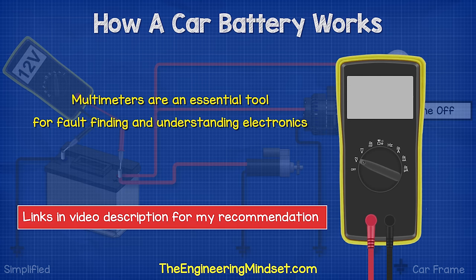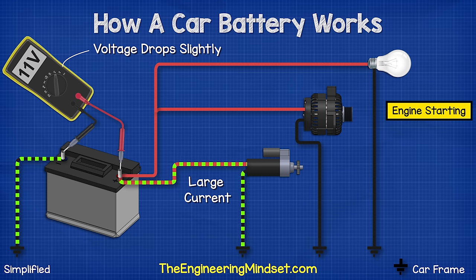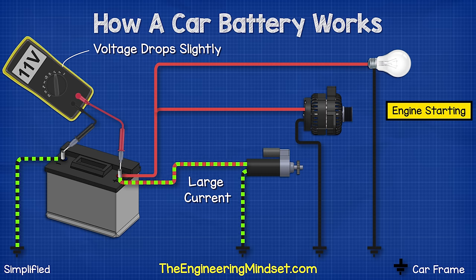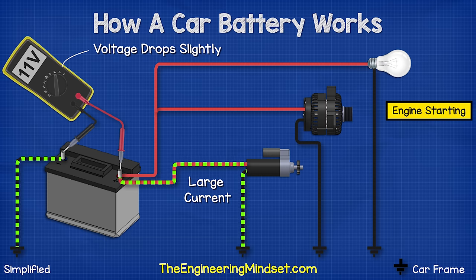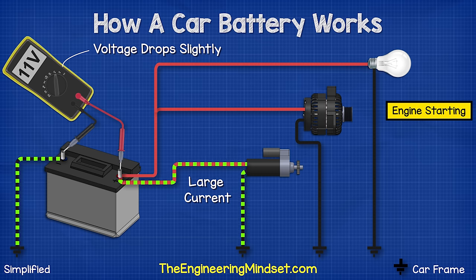By the way, if you don't already own a multimeter, I'll leave a link in the video description for which ones I recommend. When we start the car the voltage will drop because the starter motor is pulling a huge amount of current. The voltage will drop to around 11 volts — if it drops below 10 then the battery is not functioning properly.